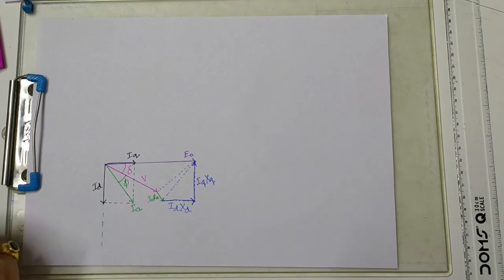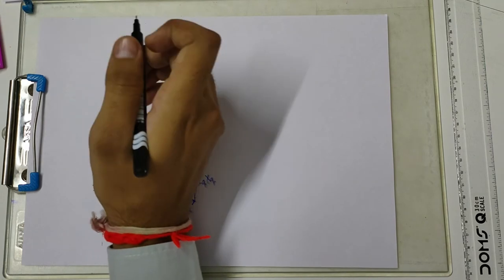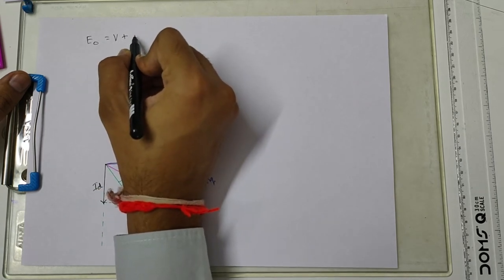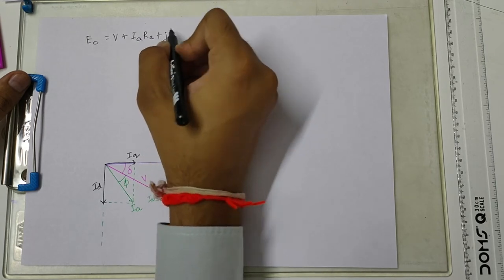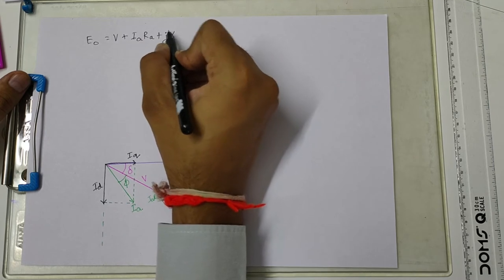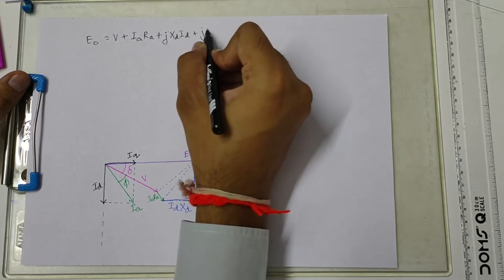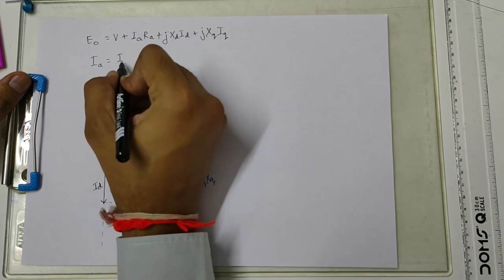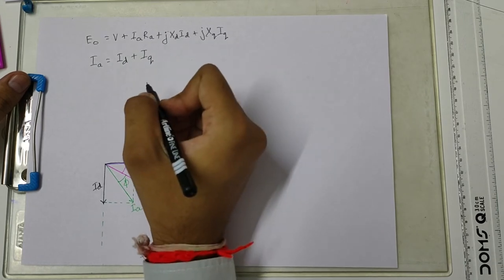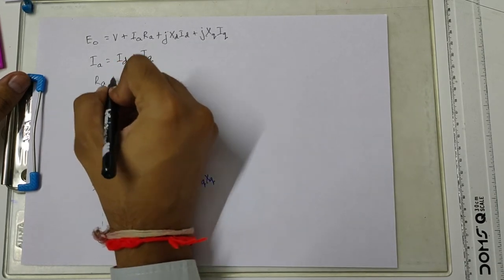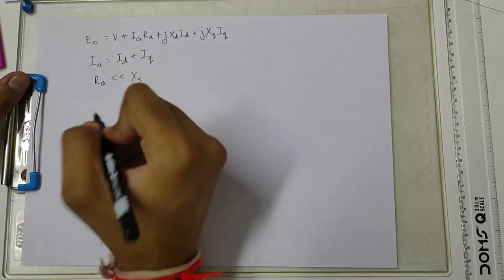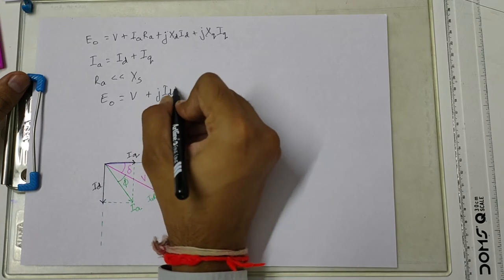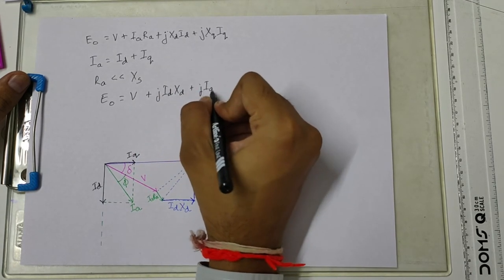We can write the equation from the phasor diagram as: E0 = V + IA·RA + j·XD·ID + j·XQ·IQ. We can also write that IA = ID + IQ. If we neglect RA, assuming RA is very much less than XS, then: E0 = V + j·ID·XD + j·IQ·XQ.